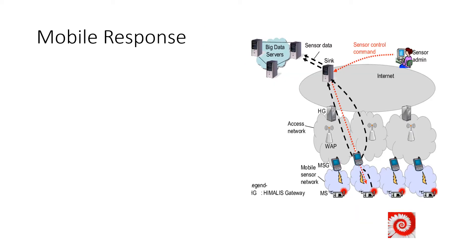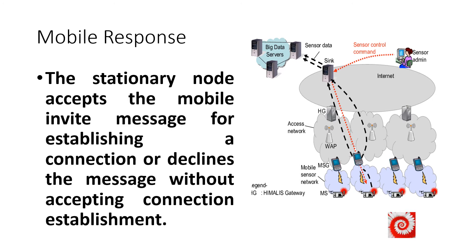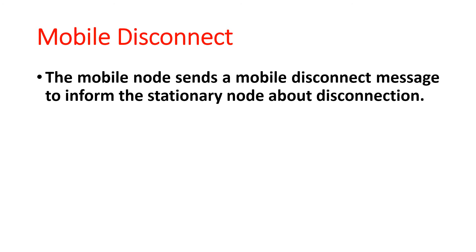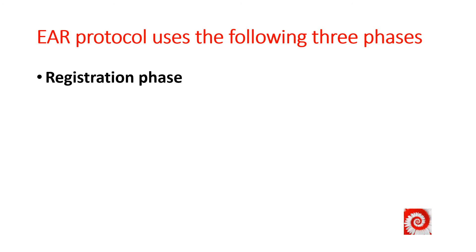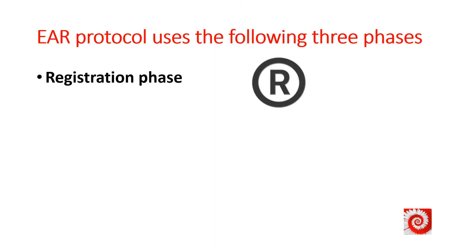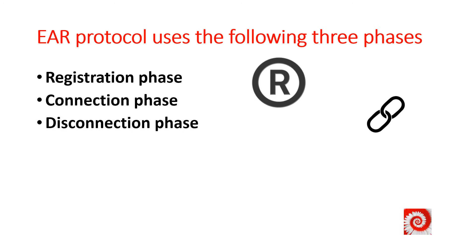Mobile response: the stationary node accepts the mobile invite message for establishing a connection, or declines the message without accepting connection establishment. The fourth message is mobile disconnect, where the mobile node sends a mobile disconnect message to inform the stationary node about disconnection. EAR protocol uses the following three phases: the first phase is registration phase, the second phase is connection phase, and the third phase is disconnection phase.